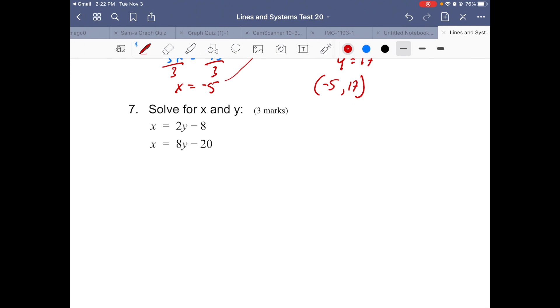Question number 7. This is already set up for the comparison method. We have x = 2y - 8 and x = 8y - 20. It's a lot easier to use the comparison method, so that's what I'm going to do.